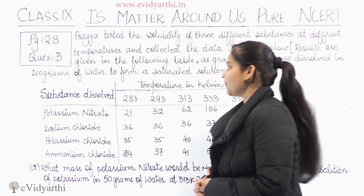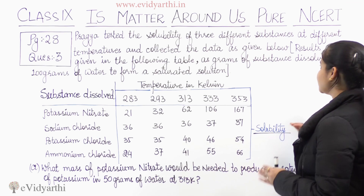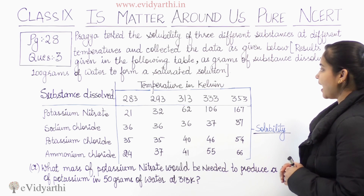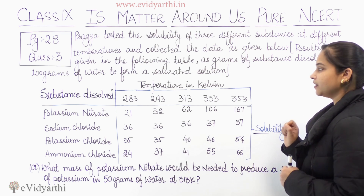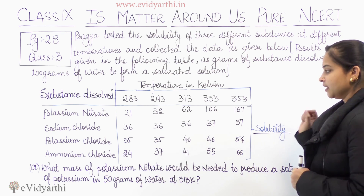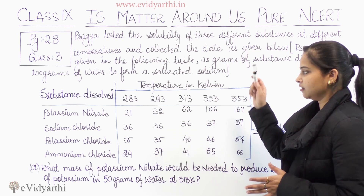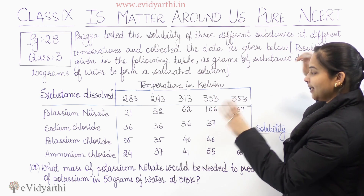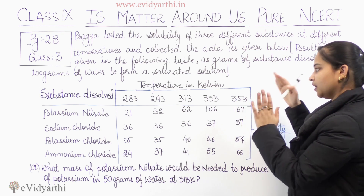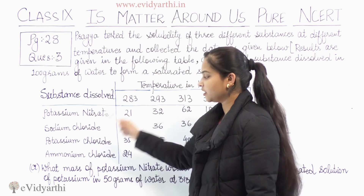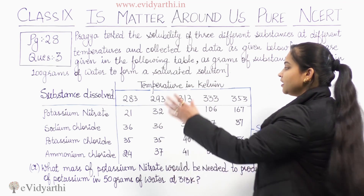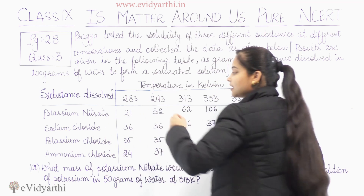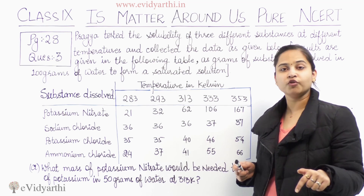So let's have a look at the question first. Pragya tested the solubility of 3 different substances at different temperatures and collected the data as given in the following table — grams of substance dissolved in 100 grams of water to form a saturated solution. These are the substances dissolved at different temperatures.